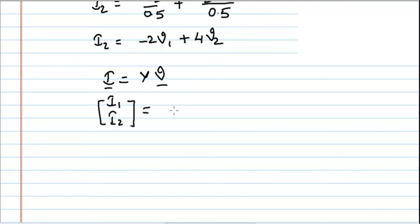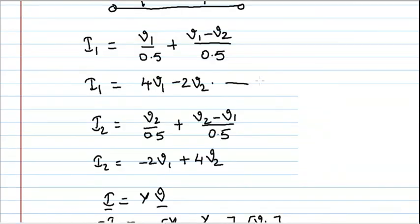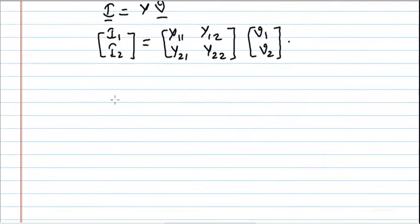Writing this in matrix form: I1, I2 equals Y11, Y12, Y21, Y22 into the voltage variables V1, V2.